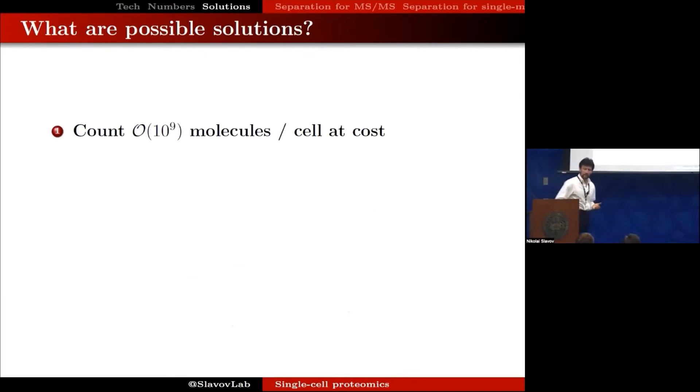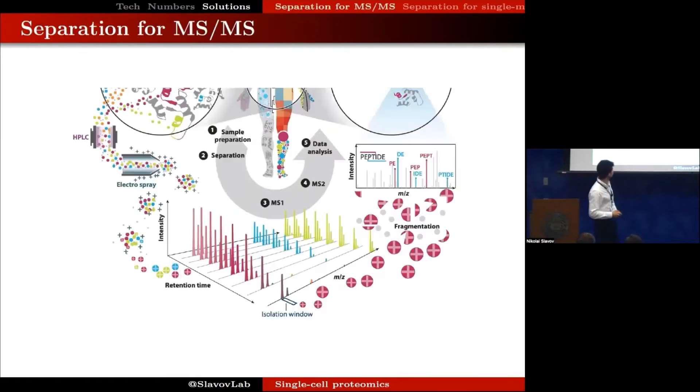So what are the options? How do we go forward? One is to brute force it. Maybe we can count at a reasonable cost billions of molecules per sample. The other approach is to sample a subset of the protein molecules so that even without counting billions of copies, we can still get reasonable estimates. Maybe we don't need to count all 10 million copies of each ribosomal protein in a cell. Just count enough, maybe thousands rather than millions.